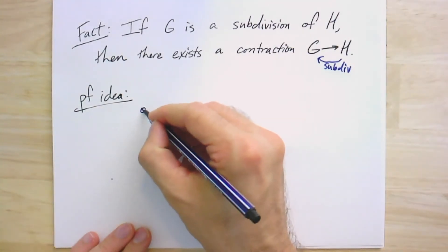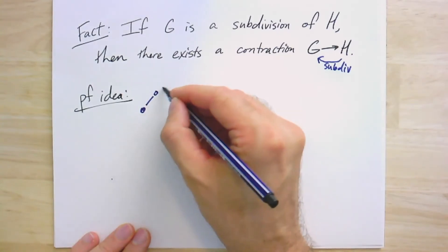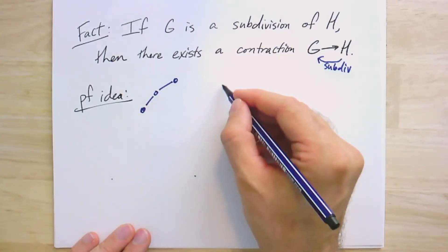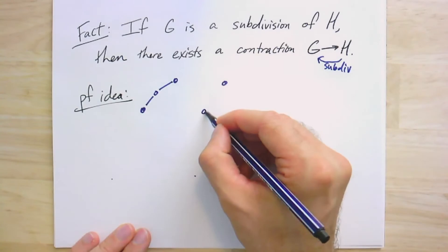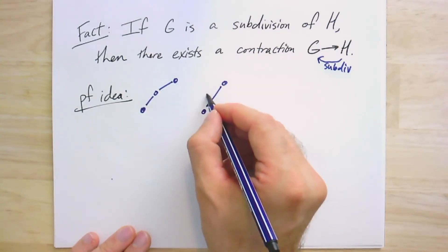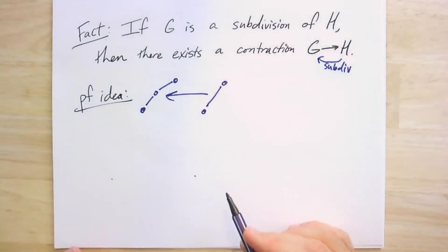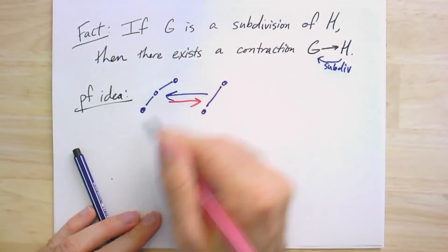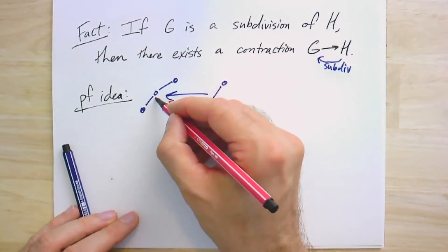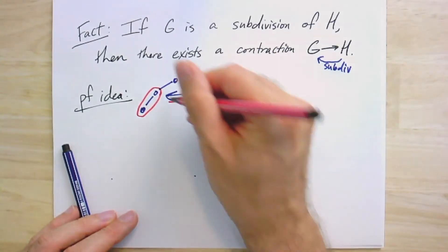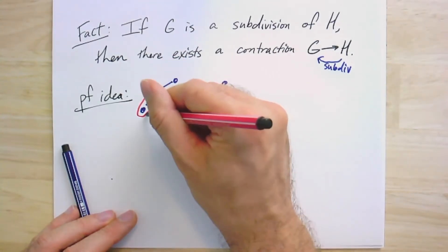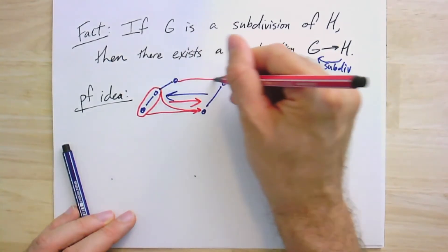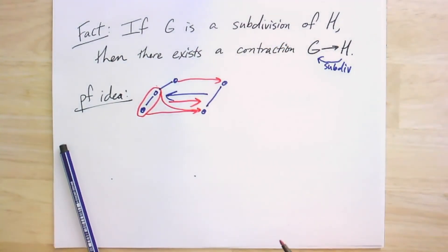And let me draw a picture just to give you the idea. If we looked at a single edge being subdivided, right? Let's take this edge and we subdivided it to form this. We get the contraction going this way. And the key will be just to pick one side or the other to map the new vertex to.